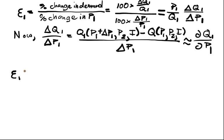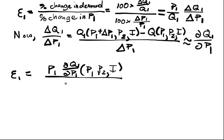So ultimately our elasticity looks like this: if we plug in this approximation, we're going to have P1 in the numerator, ∂Q1/∂P1 of P1, P2, I, all divided by Q1 of P1, P2, I.